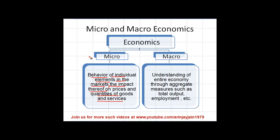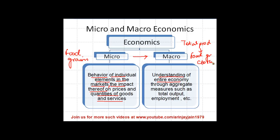So maybe a food grain market that I look at is a smaller thing. But as I move from micro to macroeconomics, macroeconomics deals with understanding of the entire economy. What was the total production? Total production includes production of food grains, clothes, real estate, and there is a laundry list of entire things. So at the macro level I deal with total production, whereas at the micro level I understand how individual elements are affecting the price and quantity of goods in that particular segment.